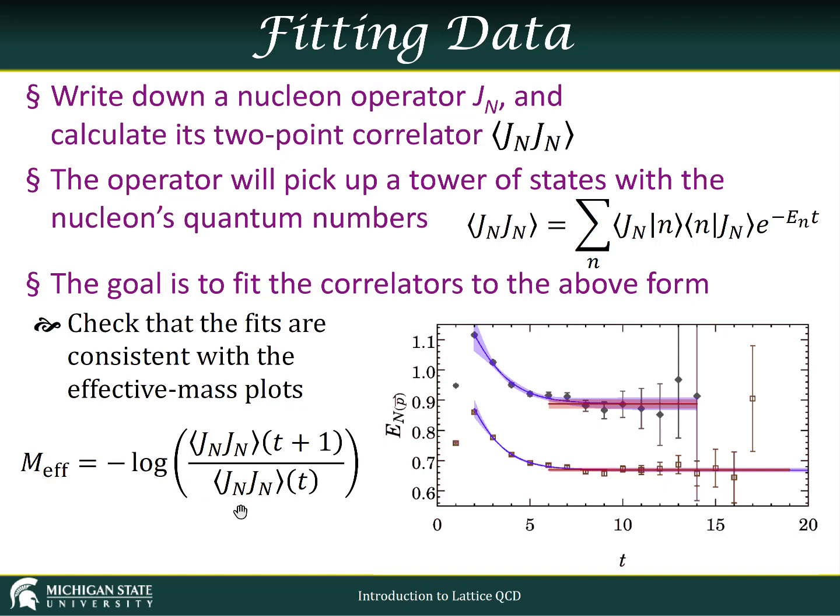Well what do we get when you do that? Well each of these things is going to have a factor of e to the minus e sub zero, we're looking at the ground state, e sub zero of t plus one divided by e to the minus e sub zero of t. Obviously it's going to be e to the minus e sub zero, we take the logarithm, now we get minus e sub zero, we add a minus sign, bam, we just got our effective mass.